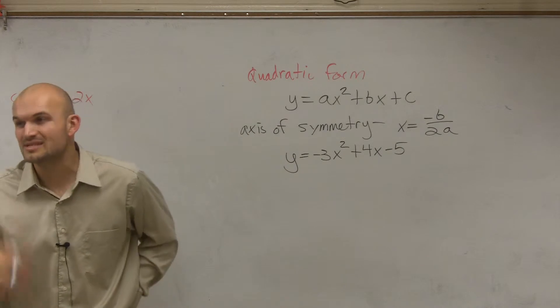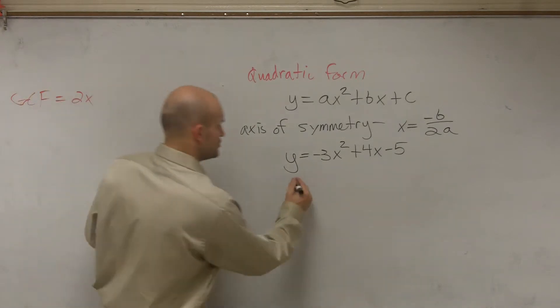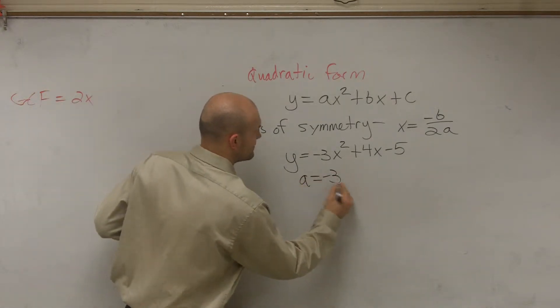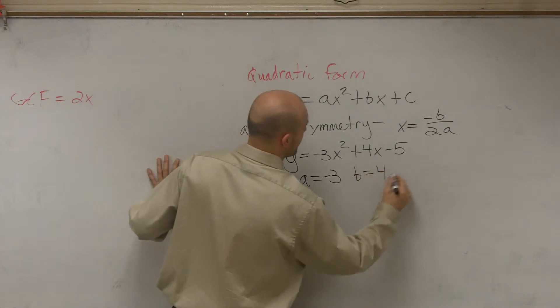So if I gave an equation, I said, hey, what's the axis of symmetry? Well, you know that a equals negative 3, b equals 4, and c equals negative 5. Right?